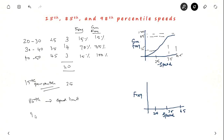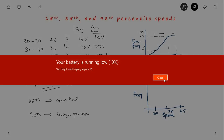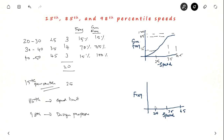The 98th percentile speed is used for design purposes. If you draw a graph between frequency and speed, you get a bell-shaped curve — 15 percent on the lower end, 70 percent in the middle, and 15 percent on the upper end. This is the frequency versus speed graph.